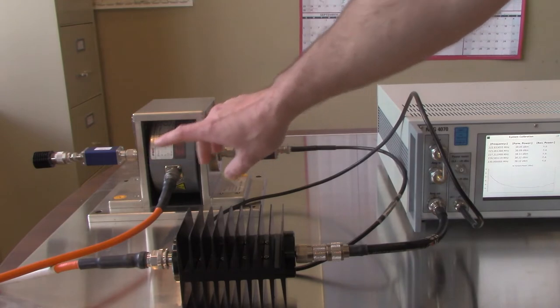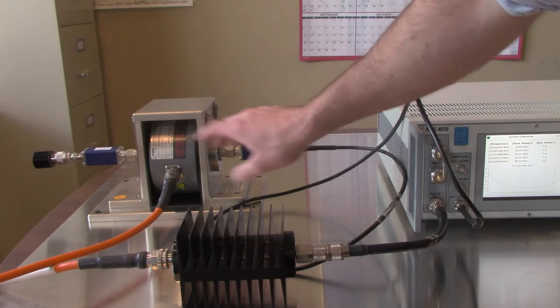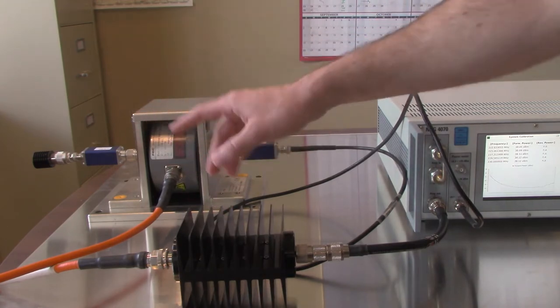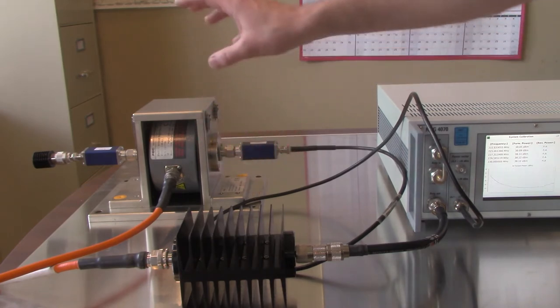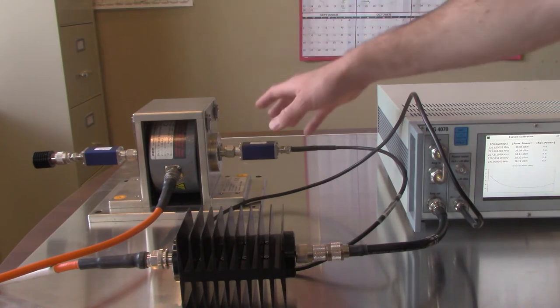Alright, working our way left here, you will see our 50 to 150 adapter followed by our termination load. These 50 to 150 adapters are used for IEC 61000-4-6 during the calibration setup which we're doing today. However, this isn't always the case with other bulk current injection requirements.